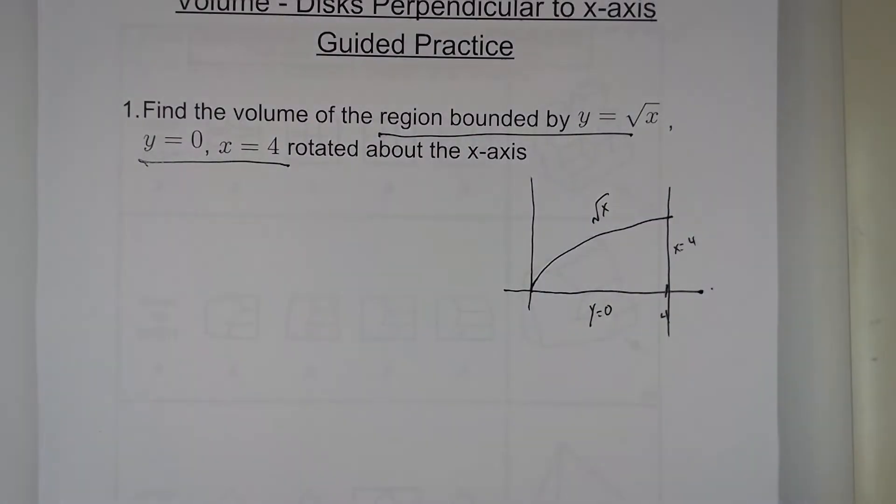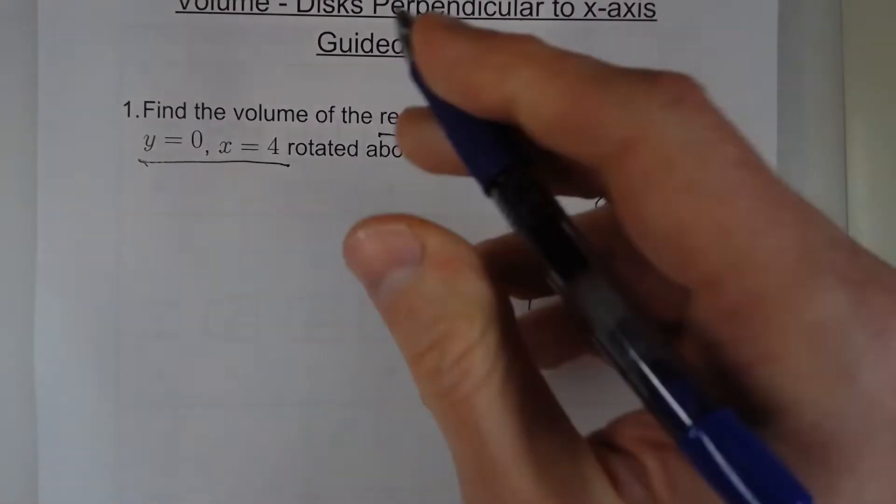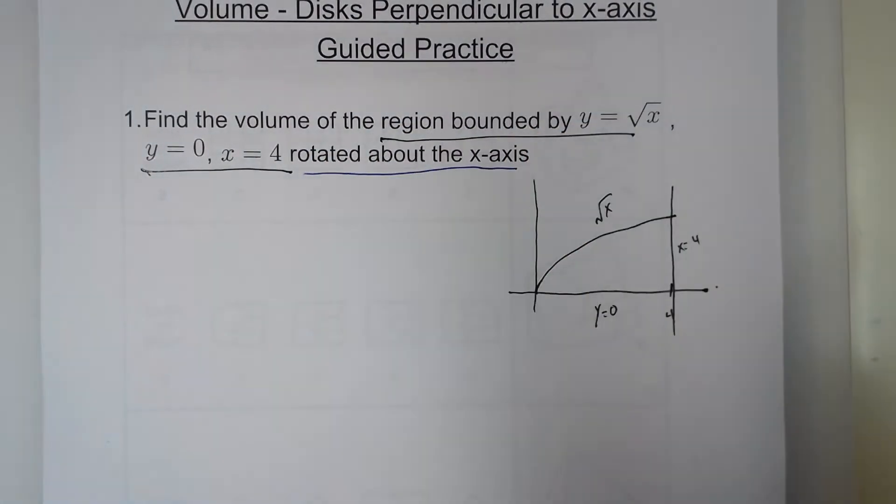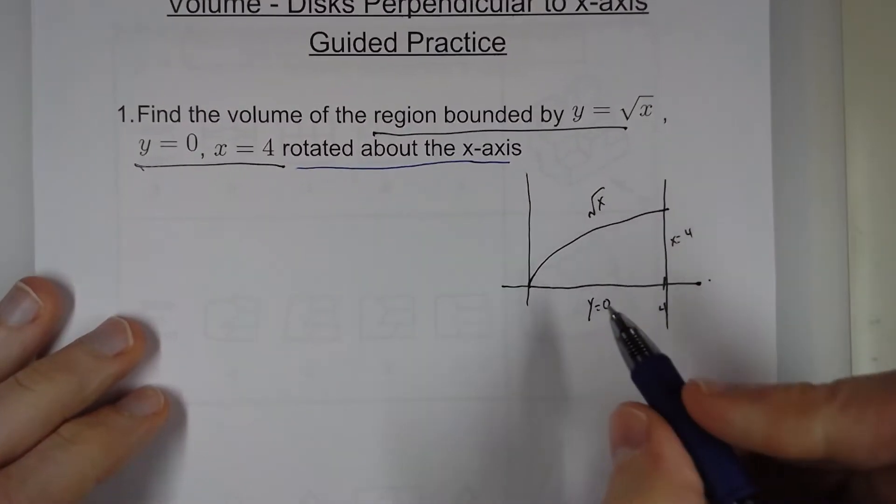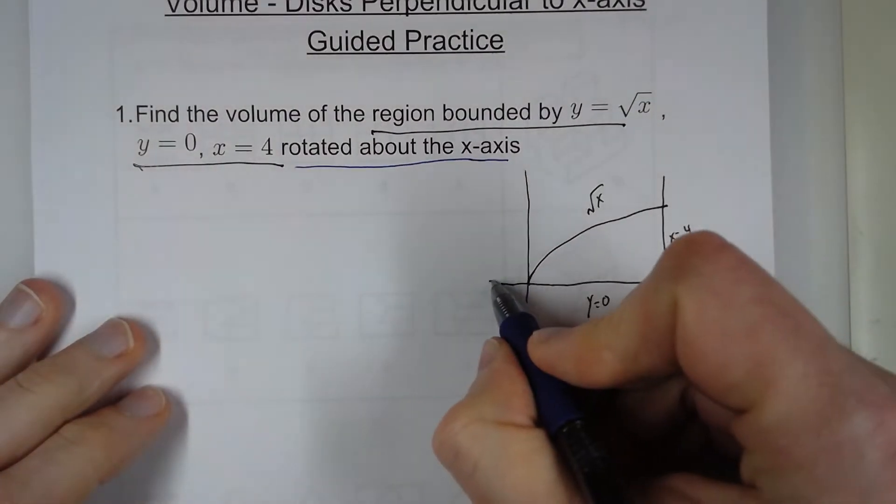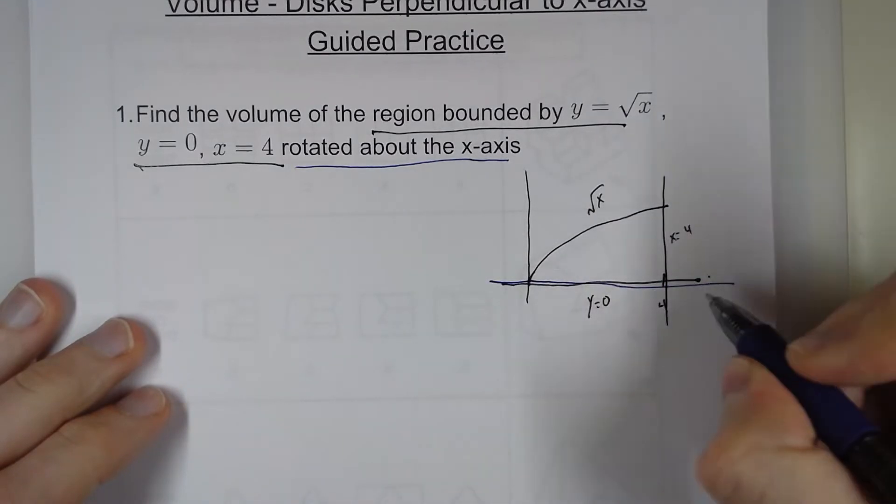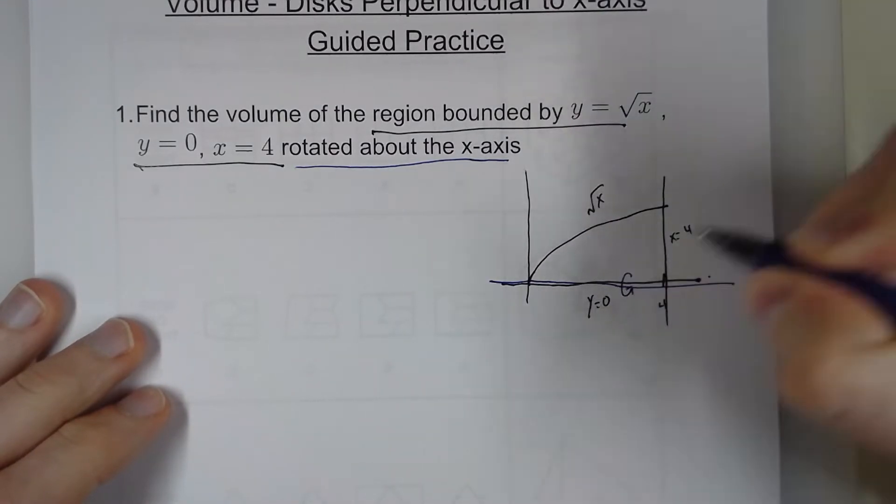The next part of these problems you have to note, which is totally different, is what is it rotated around? And as we get into later videos, you're often going to find that it's not going to be the border of one of the borders of this region. So here, this is the x-axis, and this is what it's rotating around.